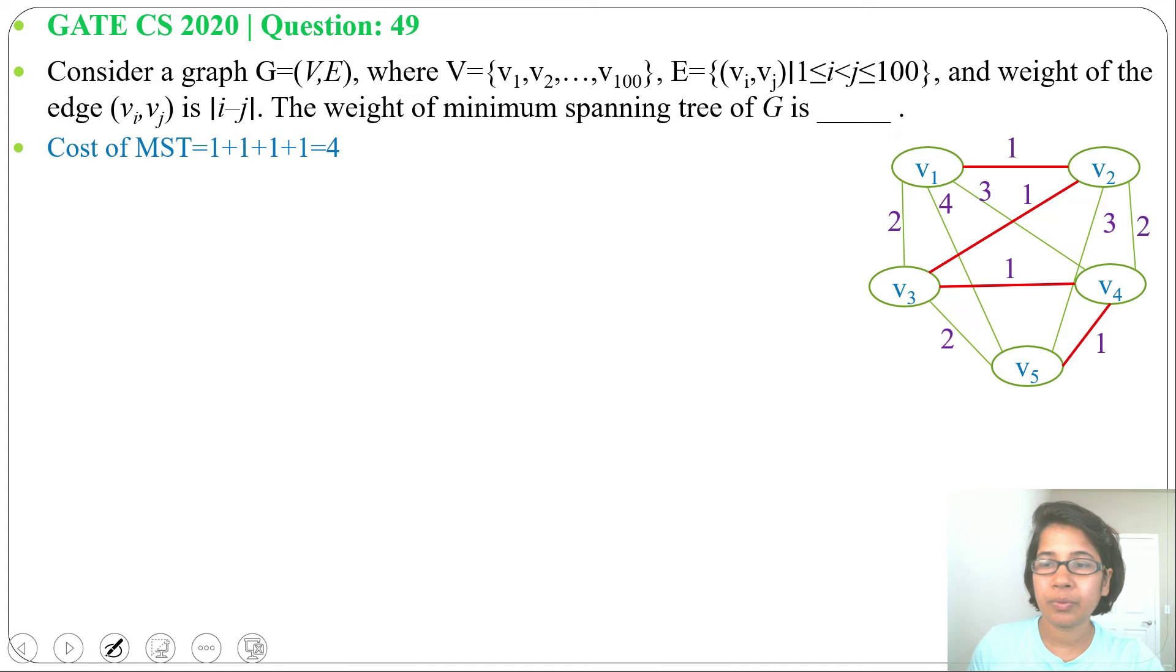The total cost of this minimum spanning tree will be 4: one plus one plus one plus one. There are 5 vertices, number of edges in minimum spanning tree is 4. Here, cost of minimum spanning tree is also 4. So you can generalize it: cost of minimum spanning tree will be number of vertices minus one.